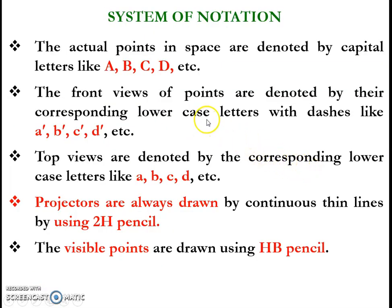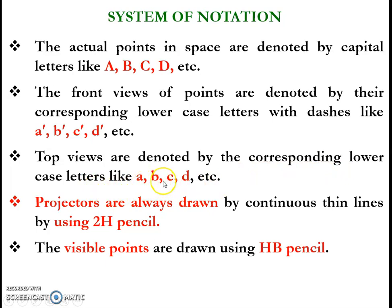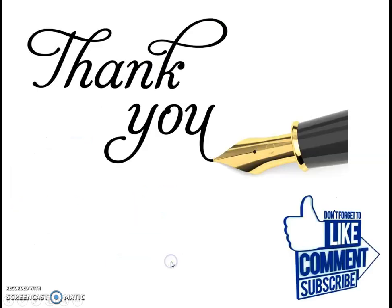Now we will see the system of notation. The actual points in space are denoted by capital letters like A, B, C, D, etc. The front views of these points need to be represented using the corresponding lowercase letters with a dash, that is small letter a-dash, b-dash, c-dash, etc. And the top views of points A, B, C, D are represented using the corresponding lowercase letters. The projectors connecting the front view points with the top view points — for example, the line which connects a-dash and a — are to be drawn only with a 2H pencil. The points need to be represented either using an H pencil or 2H pencil.